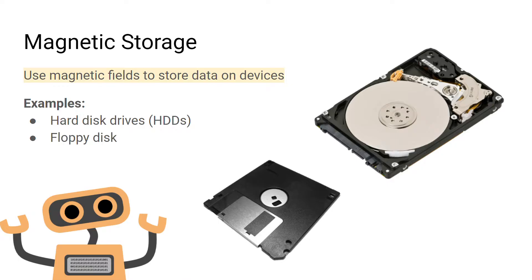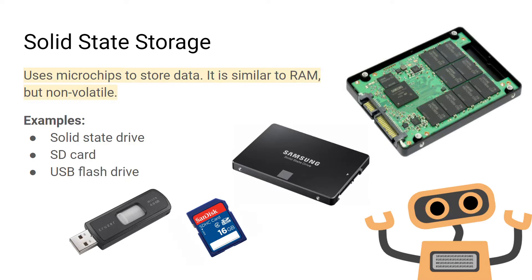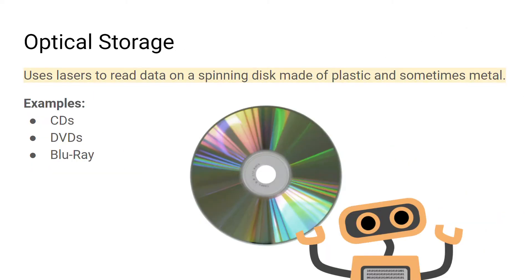Magnetic storage uses magnetic fields to store data. Examples include hard disk drives and floppy disks. Solid state storage uses microchips to store data — it is similar to RAM but is non-volatile, meaning data stays when the power is off. Examples include solid state drives, SD cards, and USB flash drives. Optical storage is read using a laser beam, stored on plastic or metal disks that spin in optical drives. Examples include CDs, DVDs, and Blu-ray.